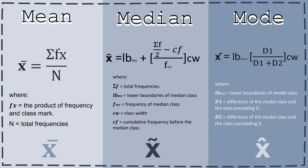Then we have the median. The median's formula is x equals Lb plus the summation of f divided by 2 minus Cf, divided by f, times Cw. Here, the summation of f is the total frequencies. Lb is the lower boundary of the median class, f is the frequency of the median class, Cw is the class width, and Cf is the cumulative frequency before the median class.